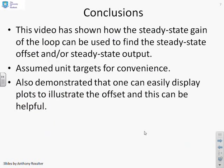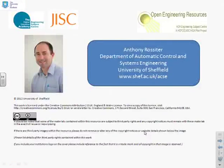In conclusion, the video has shown how you can get the steady-state gain of the loop, and this can be used to find the steady-state offset and/or the steady-state output just using the bode command. We've assumed unit targets for convenience. We've also demonstrated that you can easily display plots which illustrate what's going on because this might be helpful. Thank you very much.